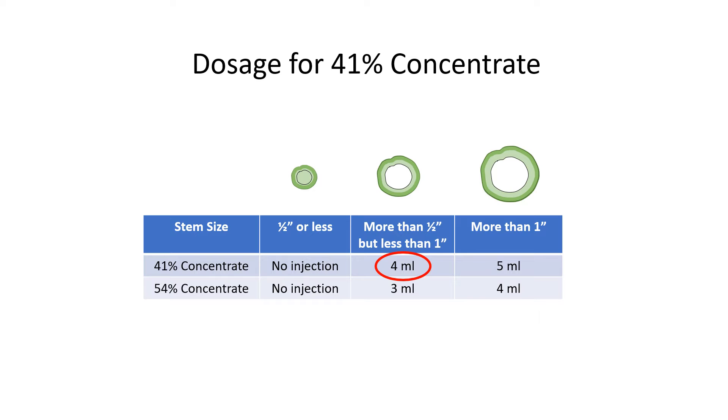Since the 41% concentrate is less concentrated, you will need to set the dosage higher. Use 4 ml if you are injecting 41% concentrate. To inject 5 ml of the 41% concentrate for stems more than 1 inch in diameter, use the same procedure for upping the dosage explained before and inject another 1 ml at the same injection site.